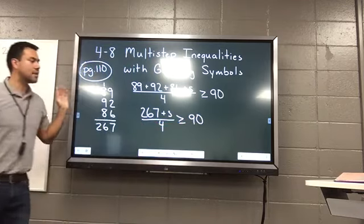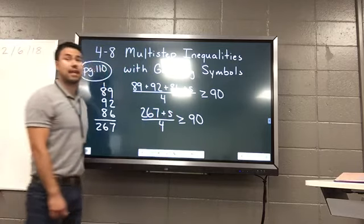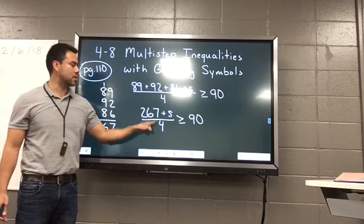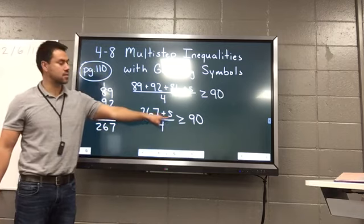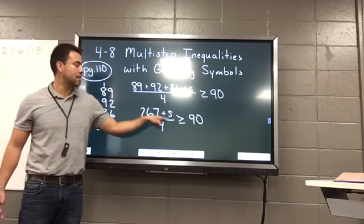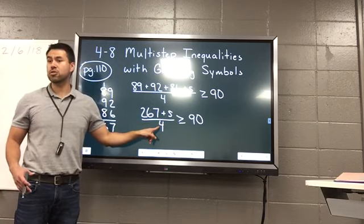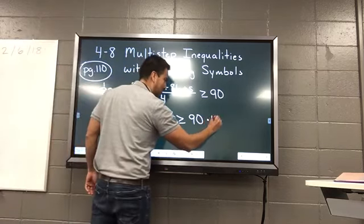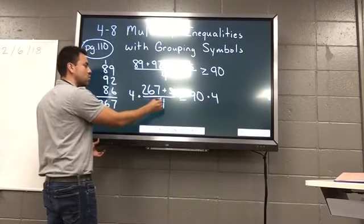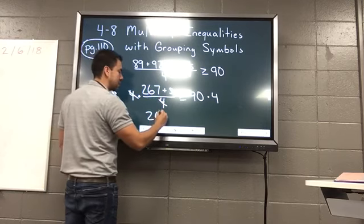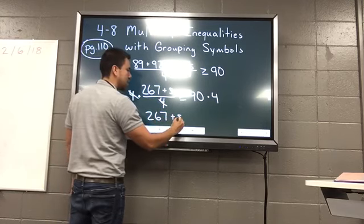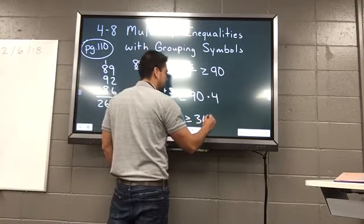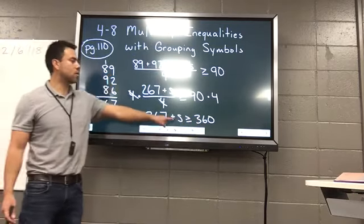Is there anything else I can do to simplify? Can I make this any simpler? And the answer to that is no. What's happening to S? First it's being added, then it's being divided by 4. What do I have to undo first? The division by 4. What will undo that? Multiplying both sides by 4. What happens to those two 4s? Cancel out. I'm going to have 267 plus S is greater than or equal to, what's 90 times 4? 360.